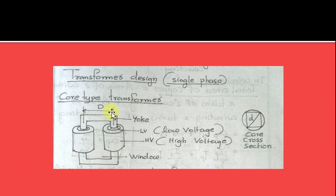This is the yoke, and near to it a low voltage winding. Above that winding, a high voltage winding is present. Distance between core is named as D. This is window. When taking cross section of core, the diagonal drawn to it is named as small d.